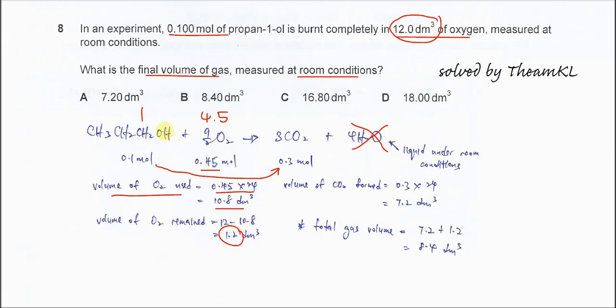And you have to know, the propane-1-O is totally gone. And the CO2 form is 0.3 times the molar volume. We get 7.2 dm³. So this is gas.